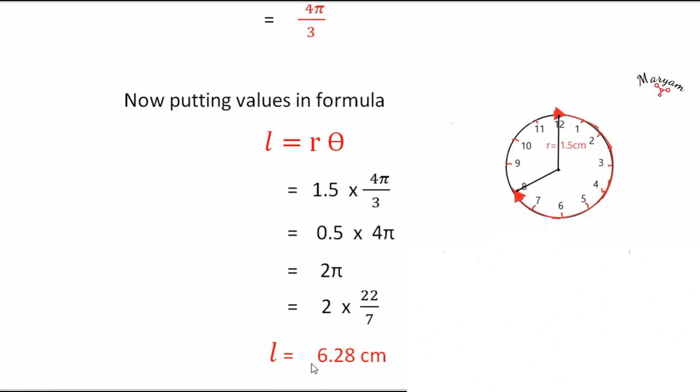So 2 into 22 by 7 is 6.28 centimeter. So the arc length here is 6.28 centimeter. I hope you followed. If you have any doubts or questions please let me know in the comments below, and if you want me to solve any particular questions you can always let me know. Thank you students.